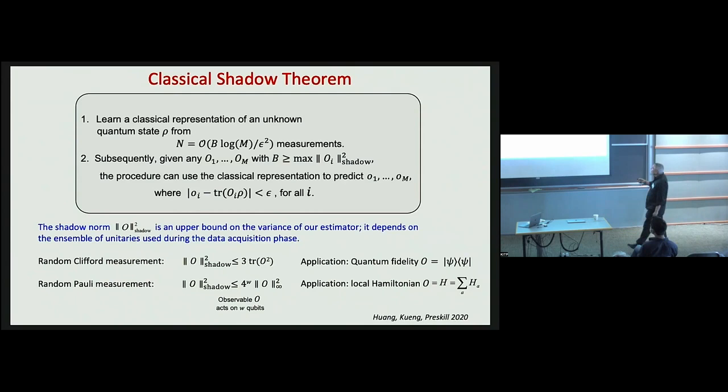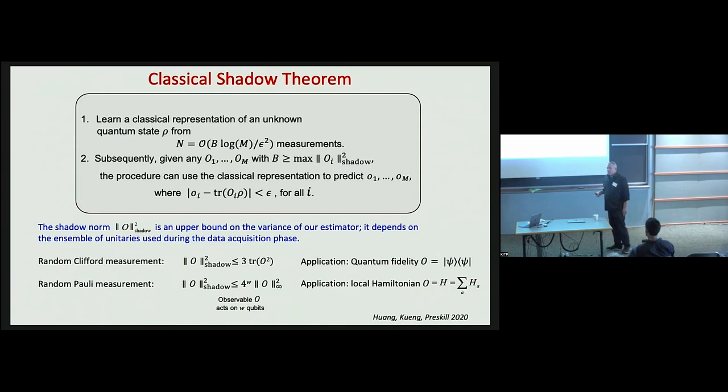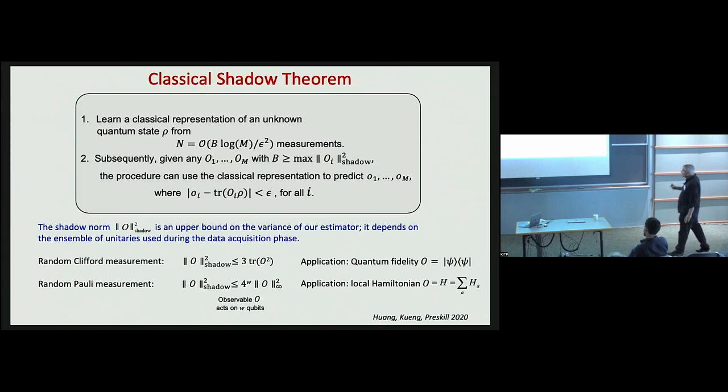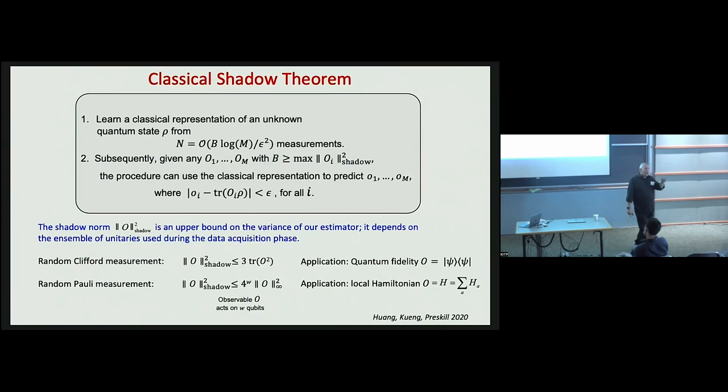The upper bound on the variance involves something we call the shadow norm. Its general form is not particularly illuminating, but there are special cases where it has a simple and useful form. One such case is random Clifford measurement: we uniformly at random apply an element of the Clifford group to the state — all of those elements can be described succinctly classically — and then measure in the computational basis. In the case of random Clifford measurement, the shadow norm is essentially the Hilbert-Schmidt norm of the observable, the trace of its square.